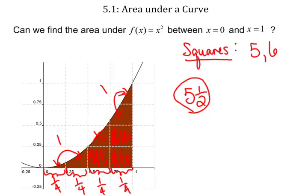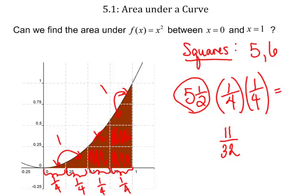How big is one square? What's the area of one square? One sixteenth. So we're going to multiply this by one-fourth times one-fourth, one sixteenth. So what is that? Eleven thirty-seconds. So that's my guess, and that's all well and good.